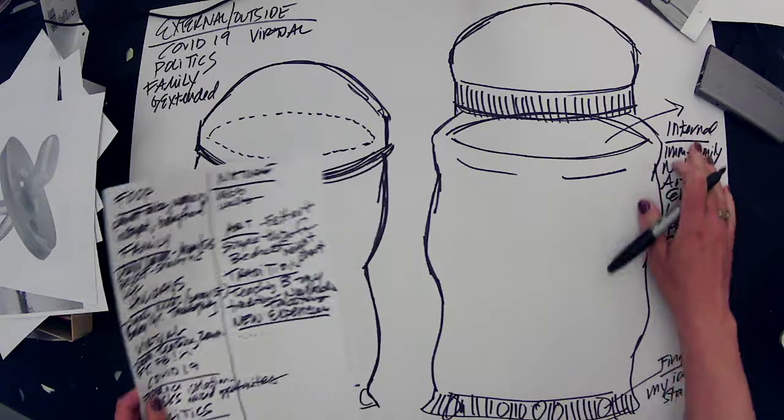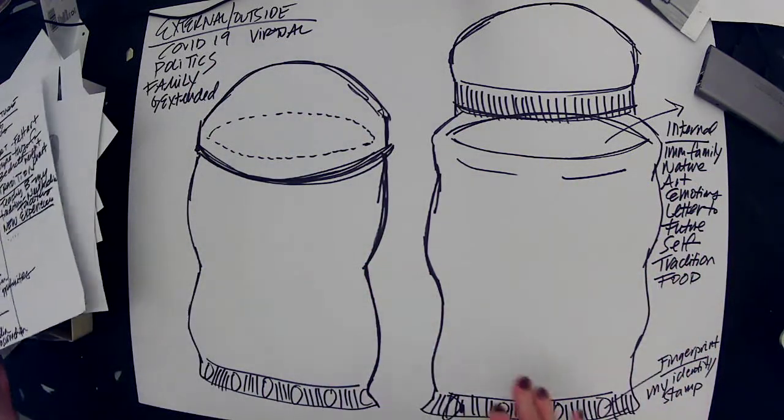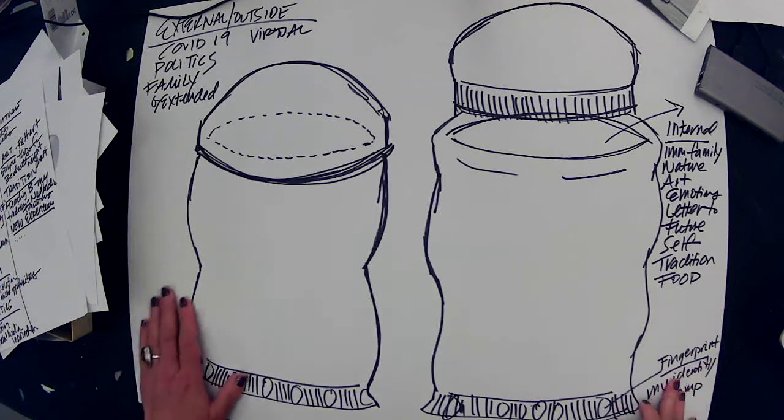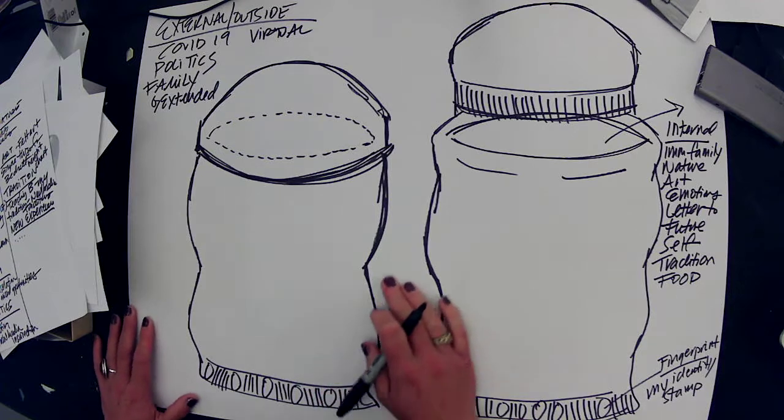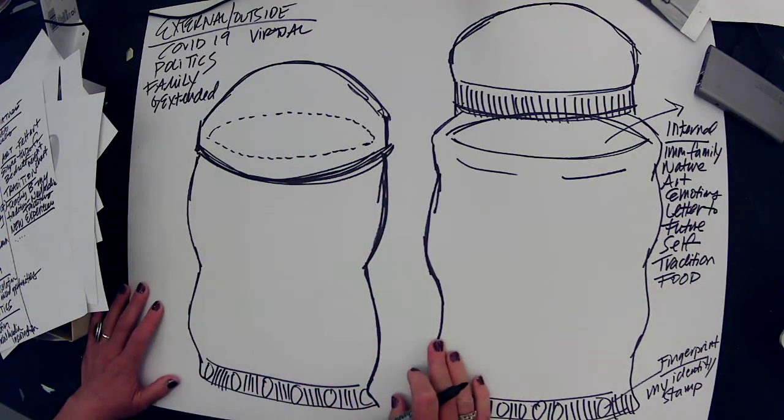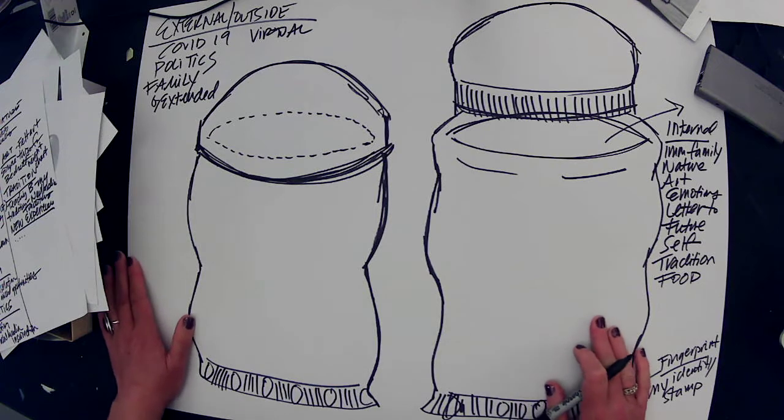Now that I have these ideas kind of written out, where do I, how do I design this, where do I put these things? Well external, what is the external story, what is going on in the world?